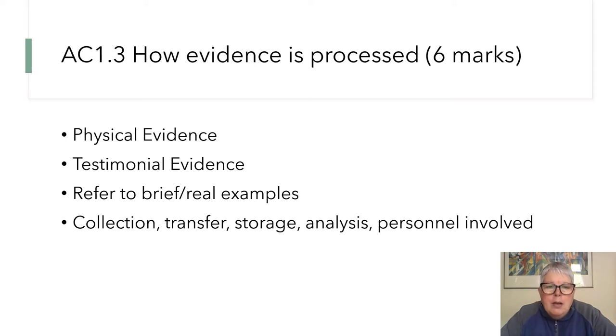For example, most biological samples are kept in paper rather than plastic because plastic sweats and therefore there could be degradation of the quality of the sample. Things like spatters of blood will be collected on paper. When you're writing up physical evidence, collection, transfer, storage, and analysis is quite straightforward.